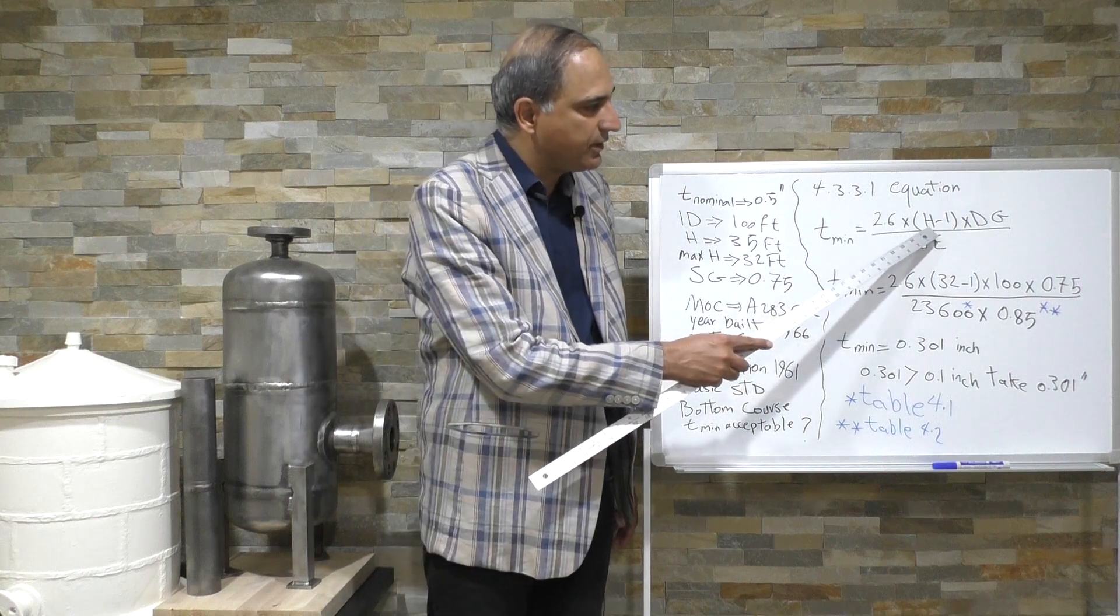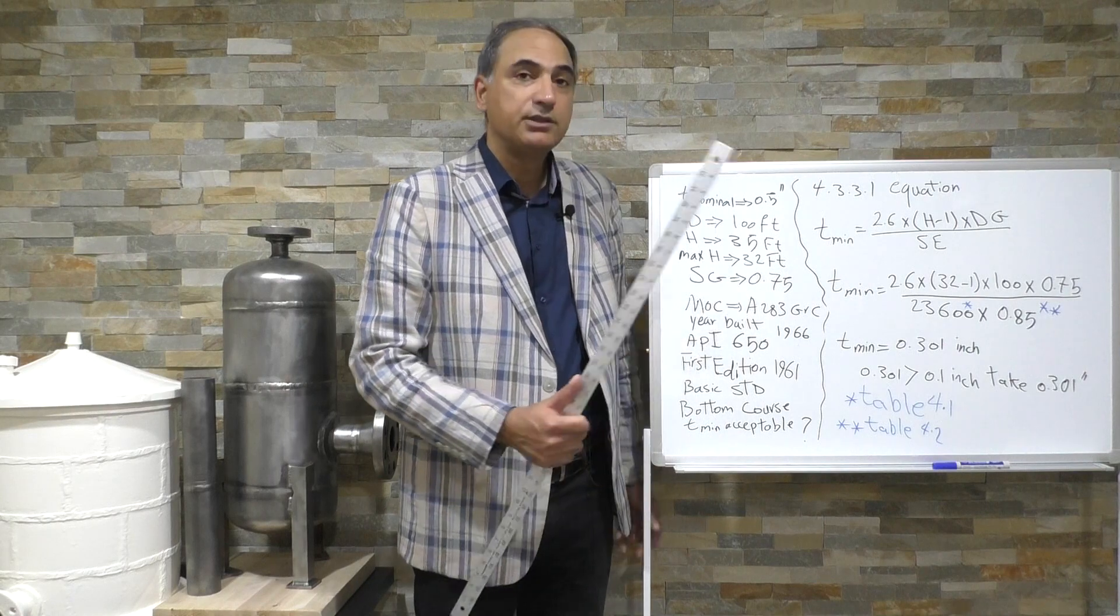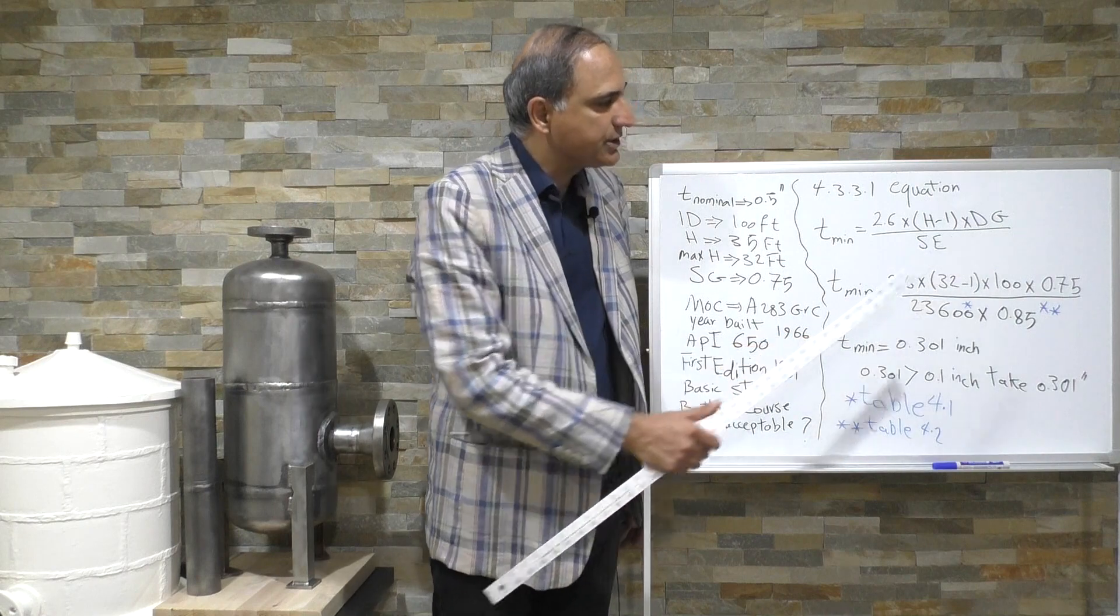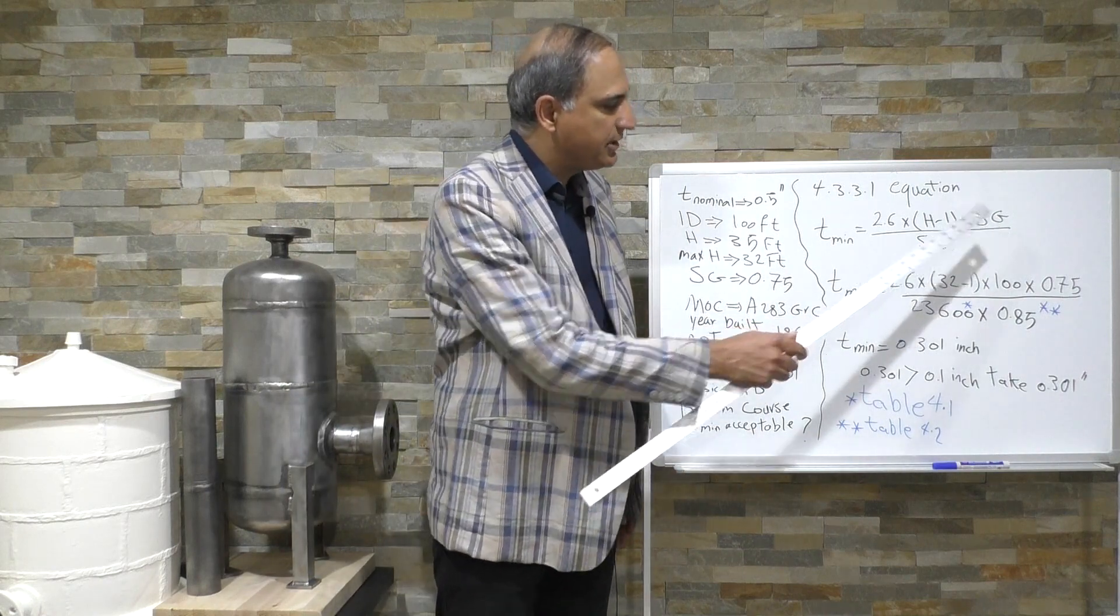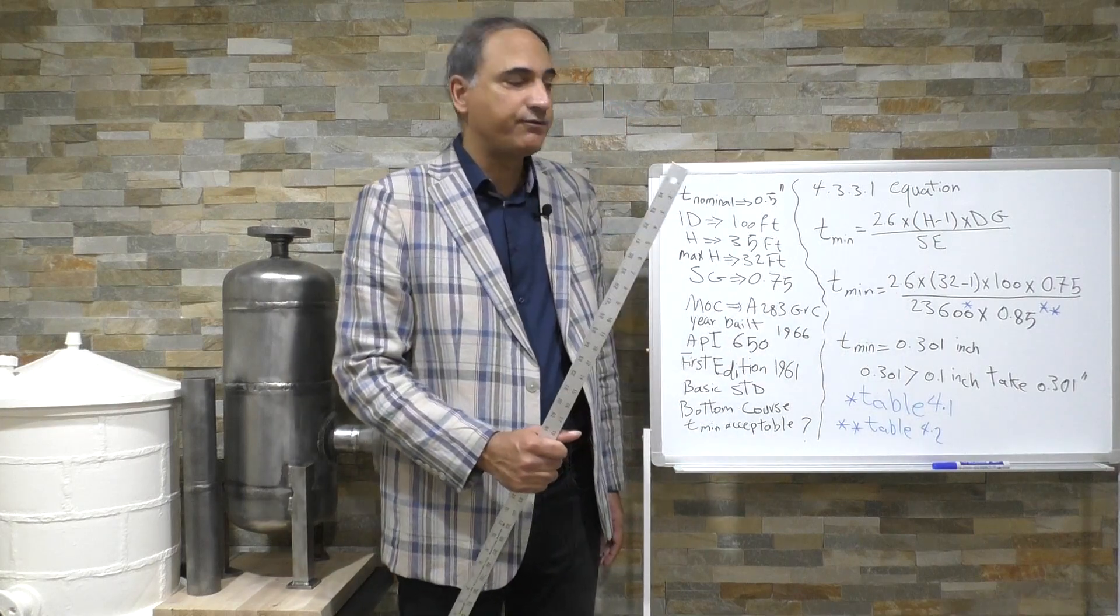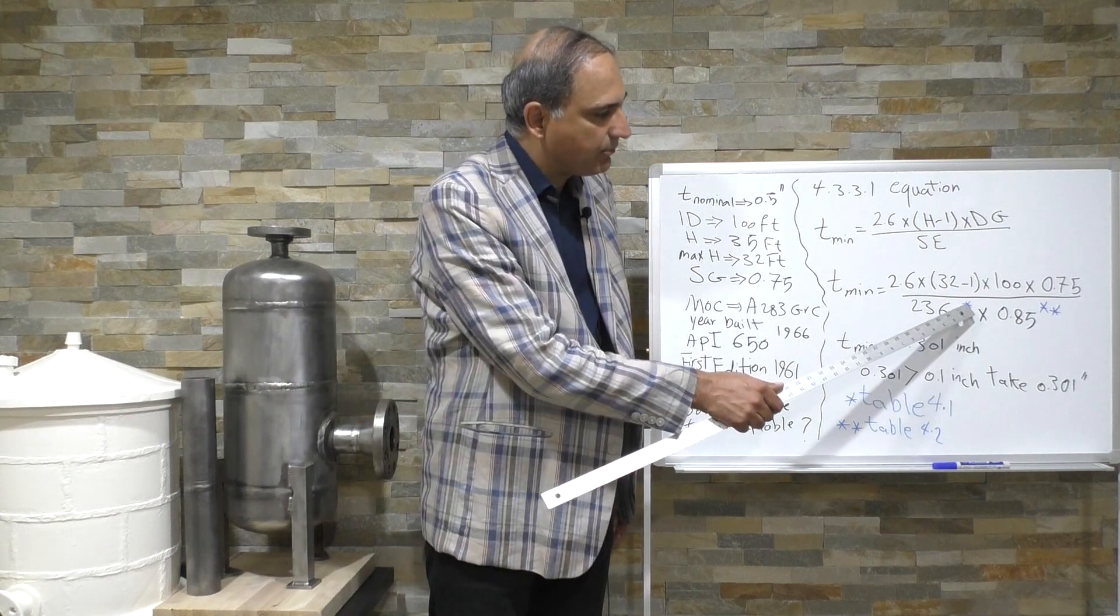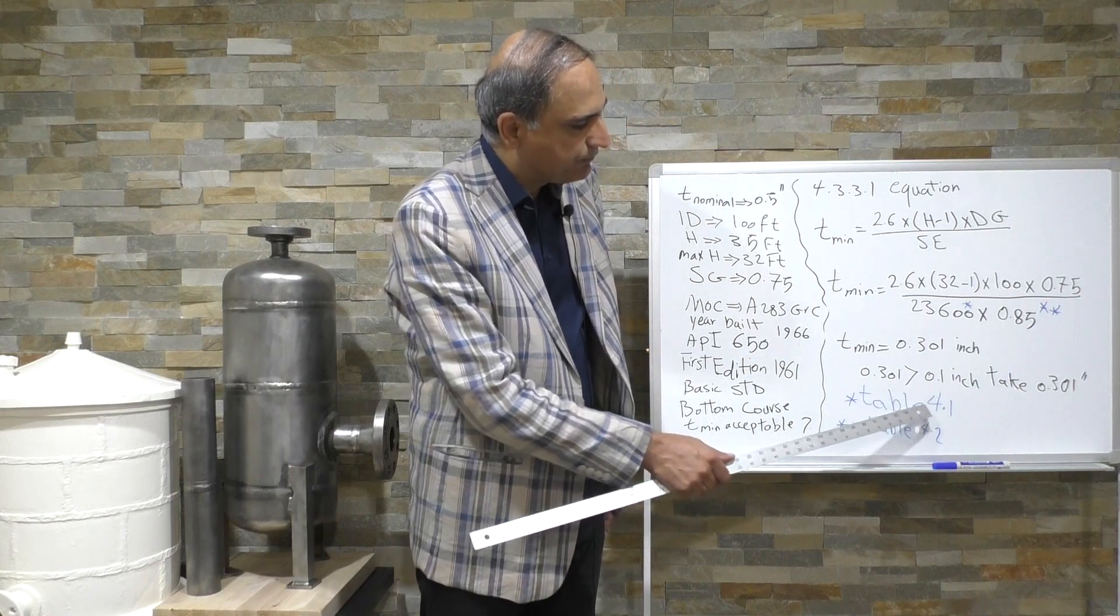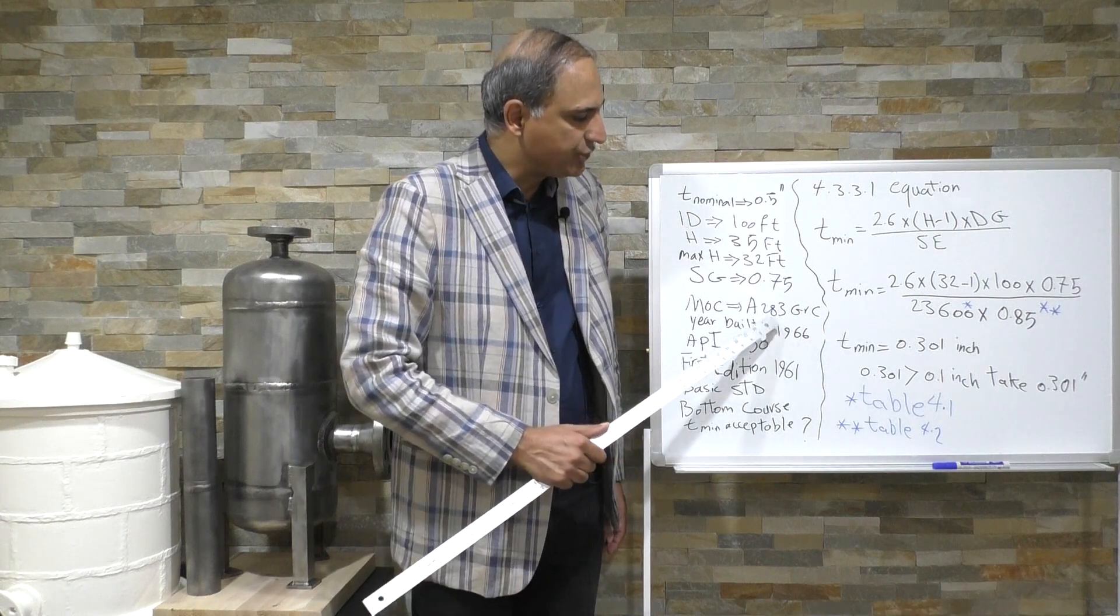So you can see here we have H which is going to be 32 feet because our maximum liquid level is 32 feet, and then we're having D which is going to be inside diameter. We have this information. G is specific gravity, we have it, and then we're having S that we have to find from this table which you can see I marked in here. You have to go to table 4.1 and find maximum allowable stress for this material.